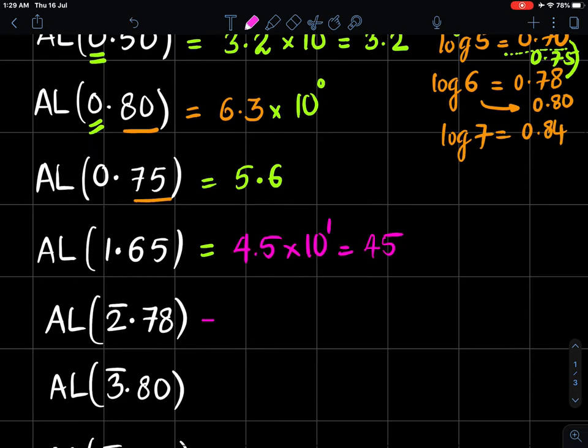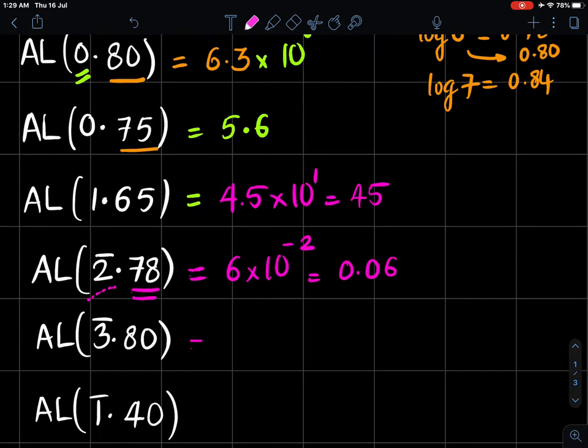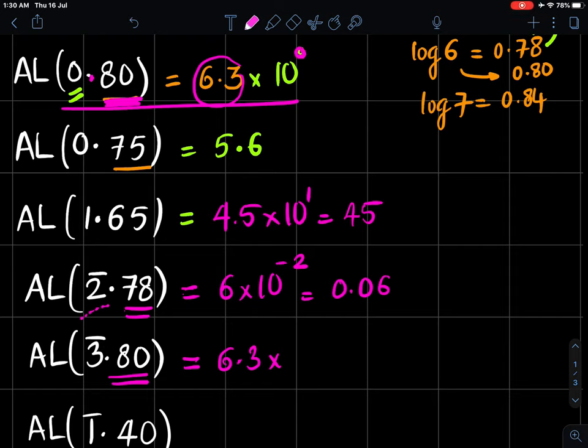Similarly, whose log is -2.78? But 0.78 is already a standard log of some number—yes, it is log of 6. So it is 6 into 10 to the power minus 2 because whatever is this is 10's power. So it is 0.06. Then 3̄.80. We have already done working of 0.80. Whatever is antilog of 0.80 is 6.3. Only thing is, 10's power was 0 and here 10's power is minus 3. So it is 0.0063.